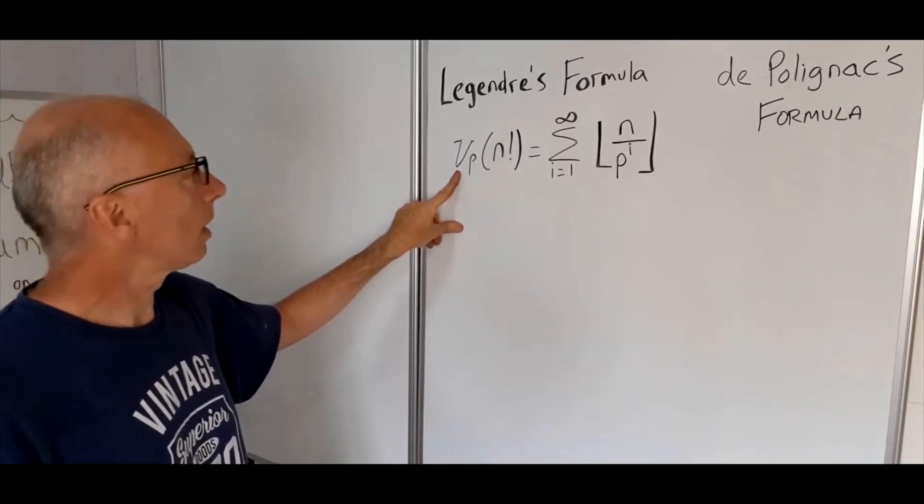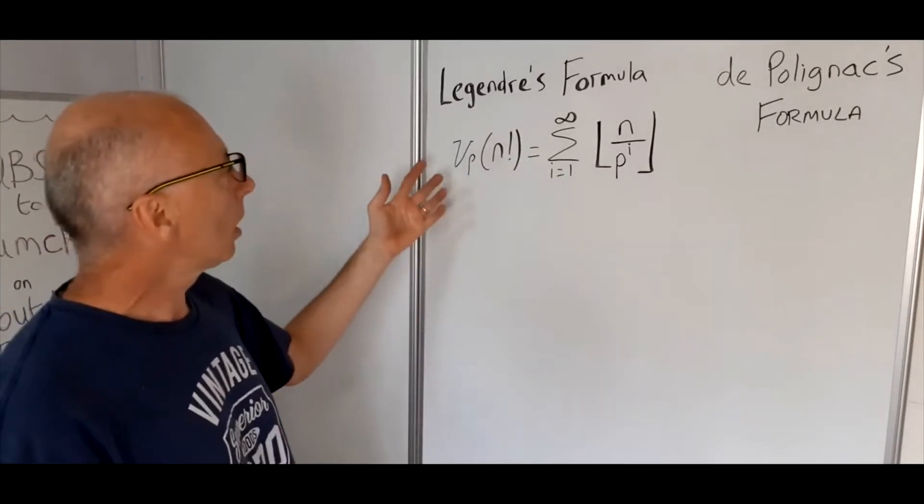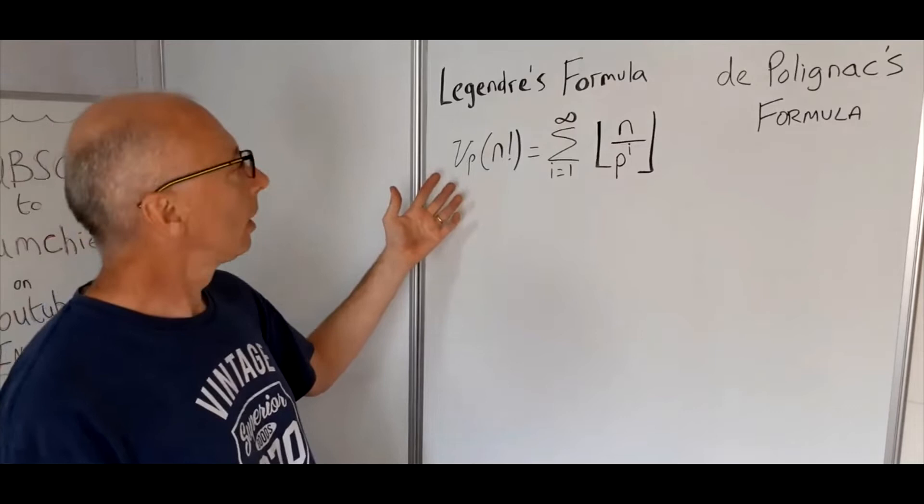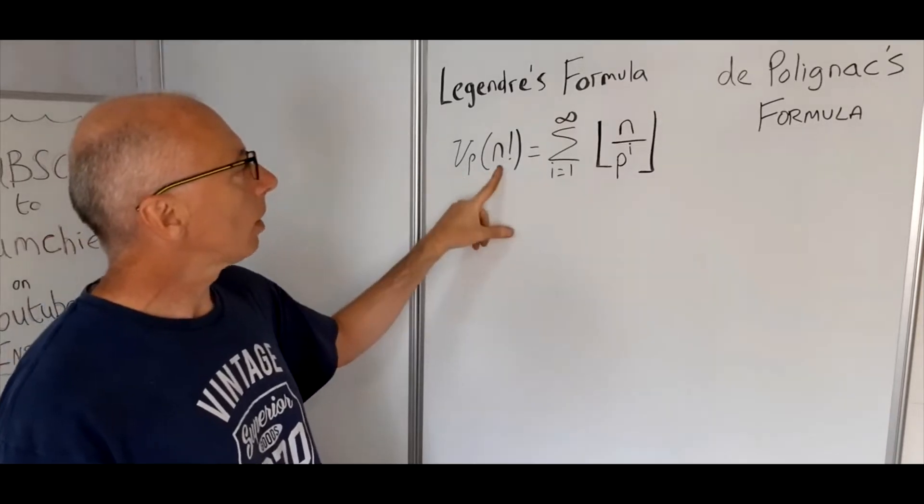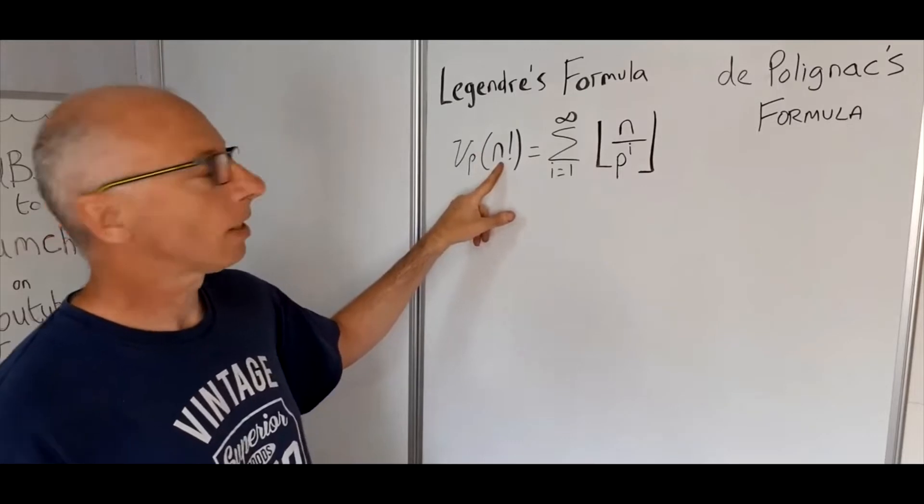So this is basically the p-adic function. It tells us how many times a prime number p appears in the factorization of the number in the brackets, in this case n factorial.